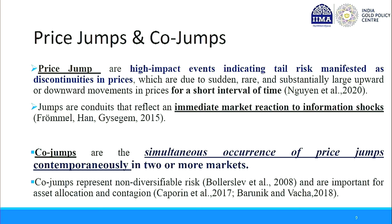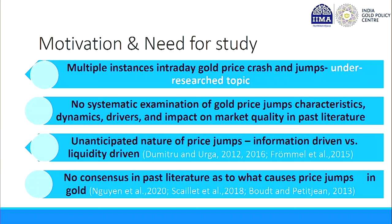How do you define econometrically these price crashes and price jumps? A price jump is a very sudden, very large upward or downward movement within minutes. When something of that magnitude happens, we call it a price jump. Price jumps are conduits of immediate market reaction to any information, whether macroeconomic news or firm-specific. When two or more assets jump together simultaneously, it's called a co-jump. My study revolves around understanding price jumps and co-jumps in gold markets.